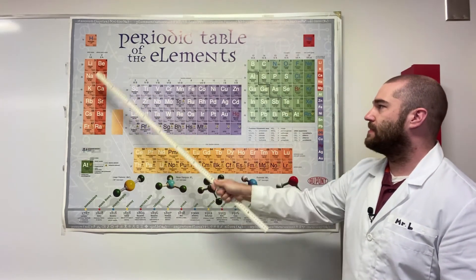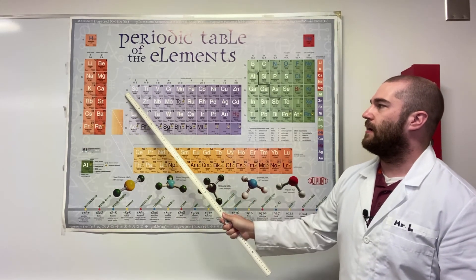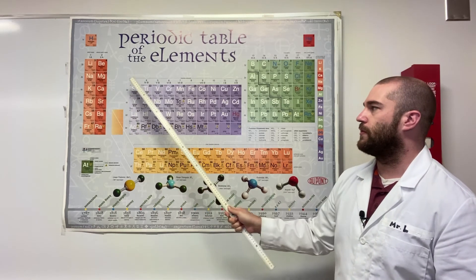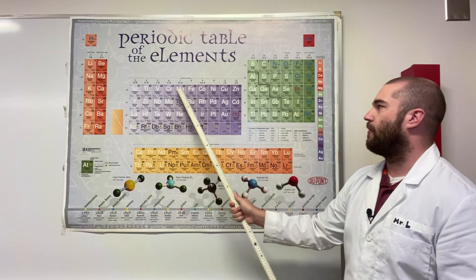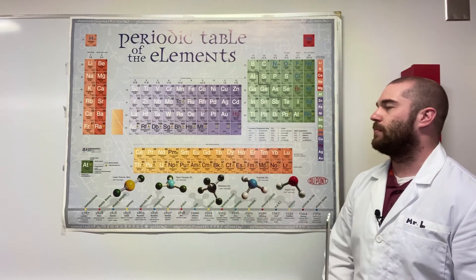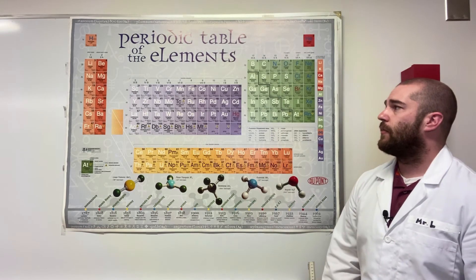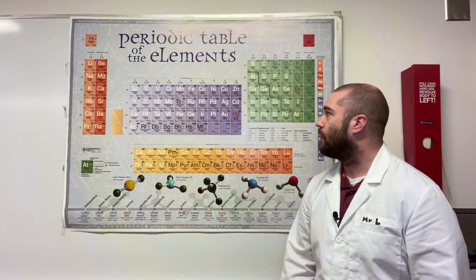Then 4S2. And then you have to subtract 1 from the period. And our special table is already labeled for us, so we're going to have to subtract 1 from 4, so it's 3D. And then we're going to come over 1, 2, 3, 4, 5, 6, 7, 8. So it would be 3D8. So it would be 1S2, 2S2, 2P6, 3S2, 3P6, 4S2, 3D8 for nickel.